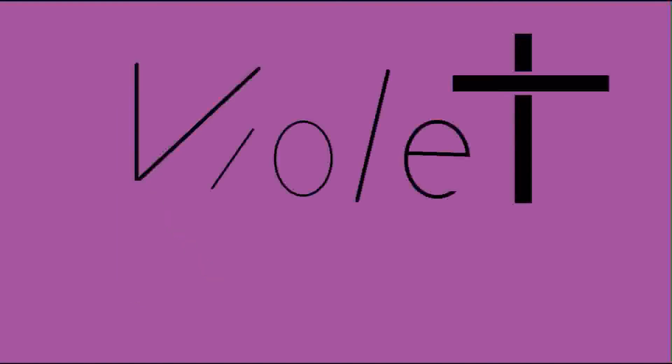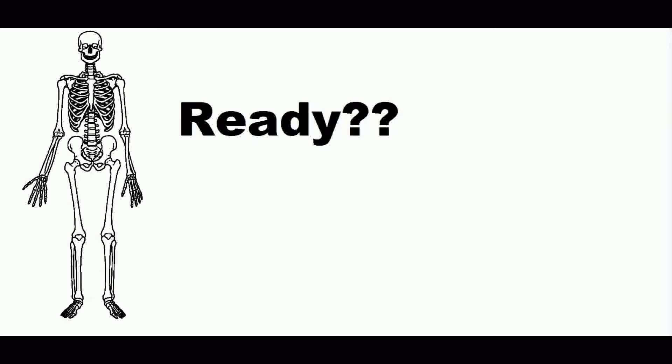For this next one: K — potassium — is violet. K violet. Get it?